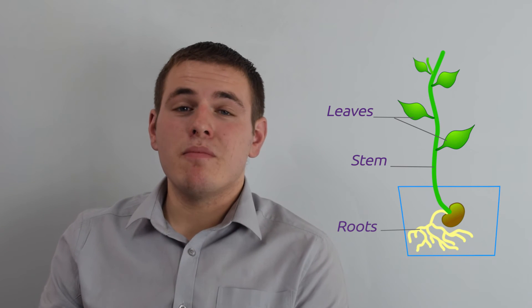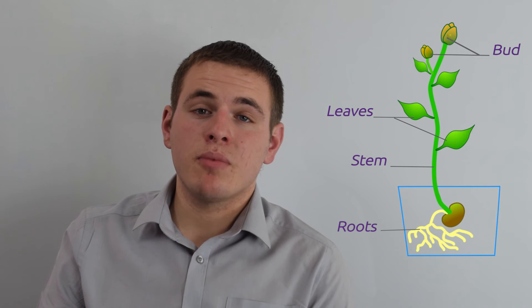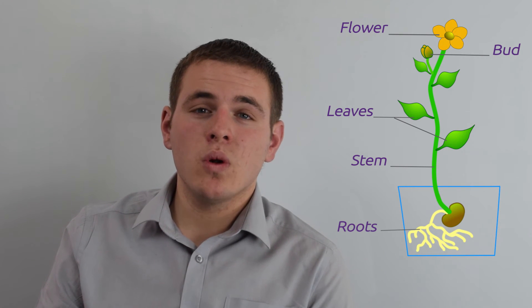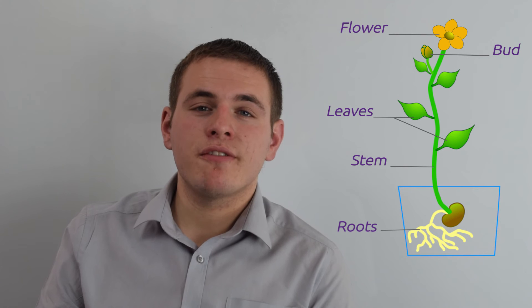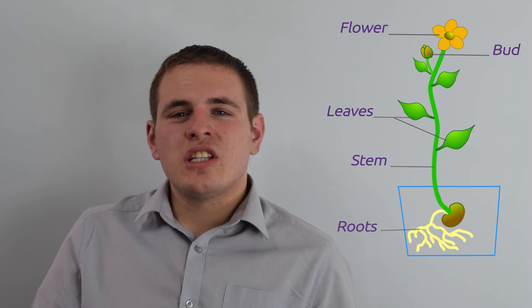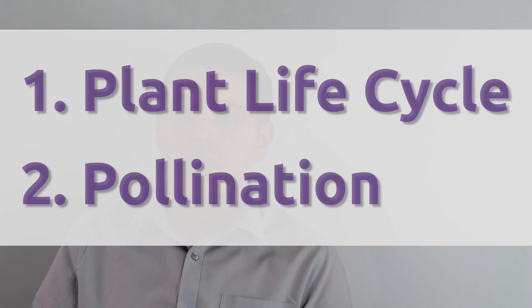And that bud will most likely become a flower. At this point, it's important to point out to your child that the plant is growing because of the water and because of the food that is contained within the seed. That's all the knowledge you really need to know for children of around six or seven. As they grow older and need more knowledge, you can start looking into the plant life cycle and pollination and how that happens in plants.